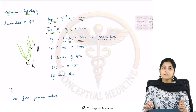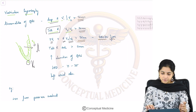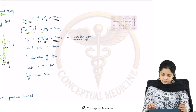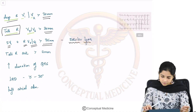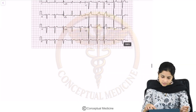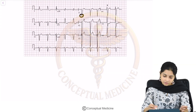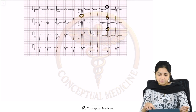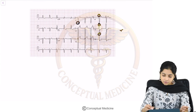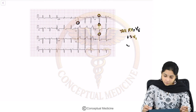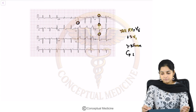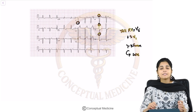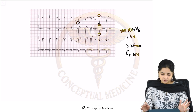Looking at this ECG, you can see deep S waves in V1 and tall R waves in V5/V6. Adding them up — tall R waves in V5/V6 plus S waves in V1 more than 35mm — is suggestive of left ventricular hypertrophy.